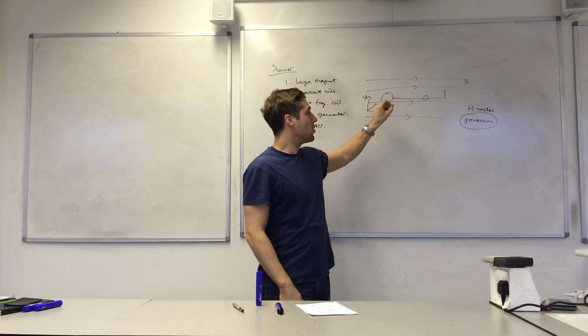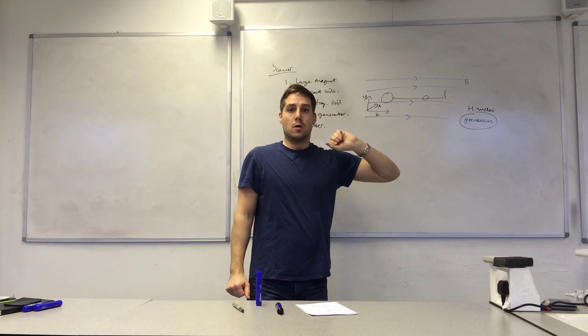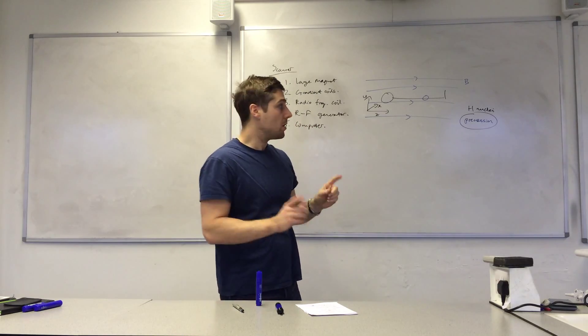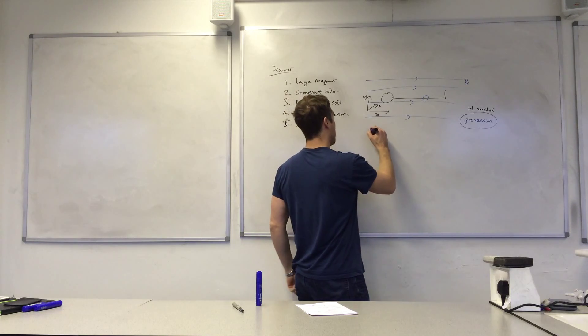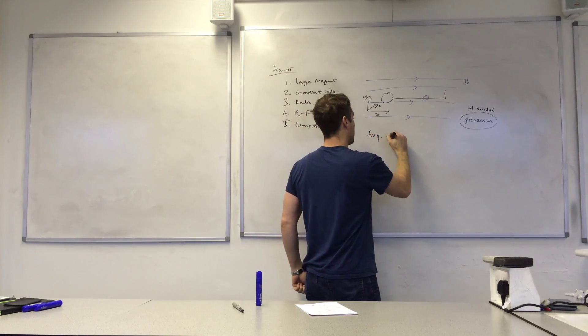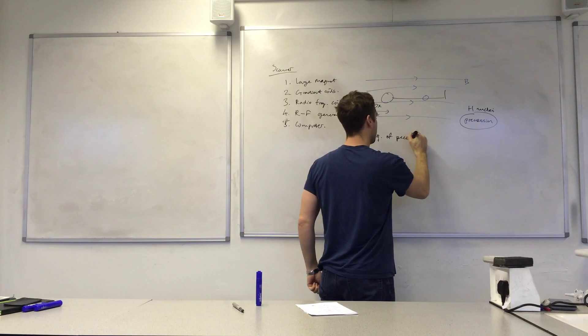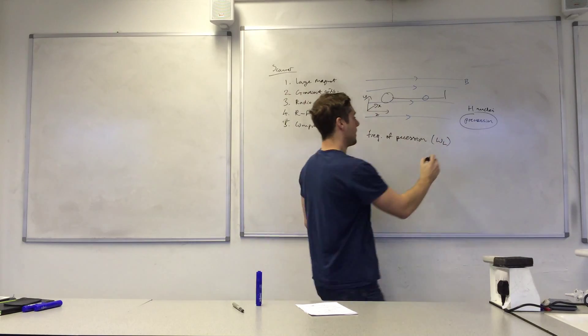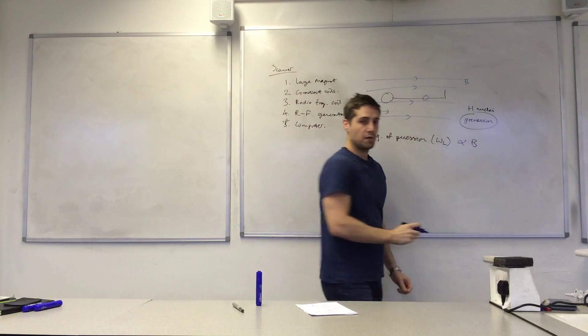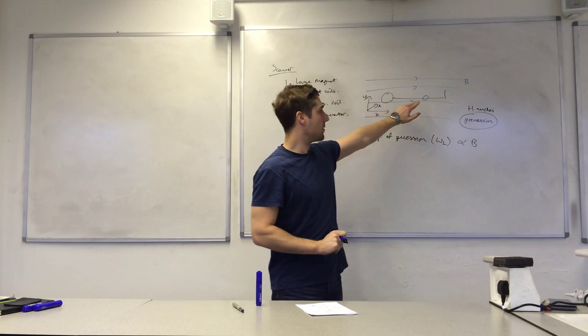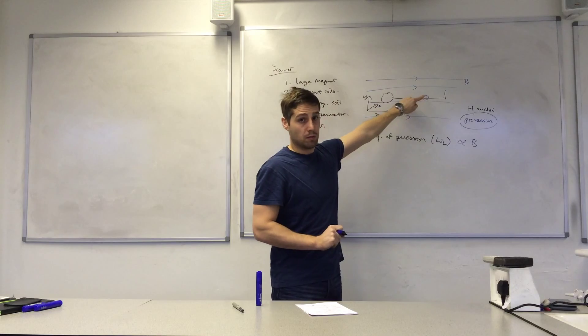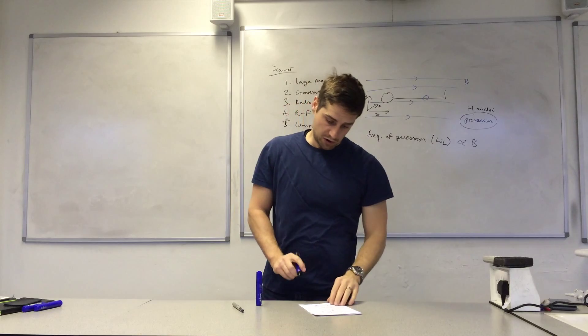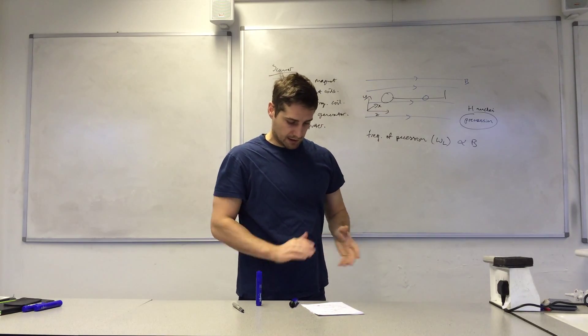Now, that will cause the nuclei to precess at a particular frequency because the frequency of precession, which is called the Larmor frequency, is proportional to the magnetic field strength. So by varying the magnetic field strength and getting it at the particular value we want there, we have the nuclei precessing at a particular value which we can determine. I won't go into how that's done just now.